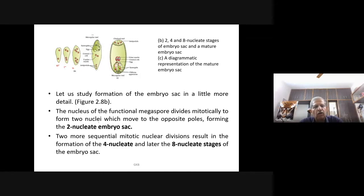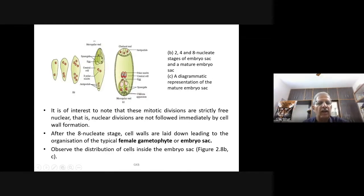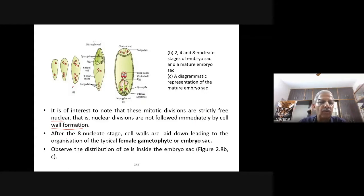Altogether now we have an embryo sac with eight nuclei. It is of interest to note that these mitotic divisions are strictly free nuclear — that means when a nucleus divides, you do not observe cytoplasmic division. There is no division of the cytoplasm, and one cell possesses eight nuclei.